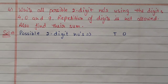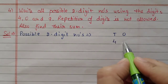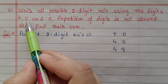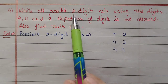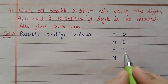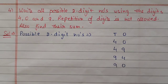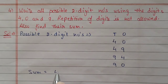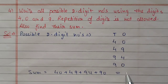Next question number 4: write all possible two-digit numbers using digits 4, 0, and 9. Repetition is not allowed, also find their sum. For a two-digit number we have ones and tens place. If tens place is 4, ones can be 0 or 9. We cannot keep 0 at tens place as it would make a one-digit number. If tens place is 9, ones can be 4 or 0. So these four possible numbers have sum: 40 + 49 + 94 + 90 = 273.